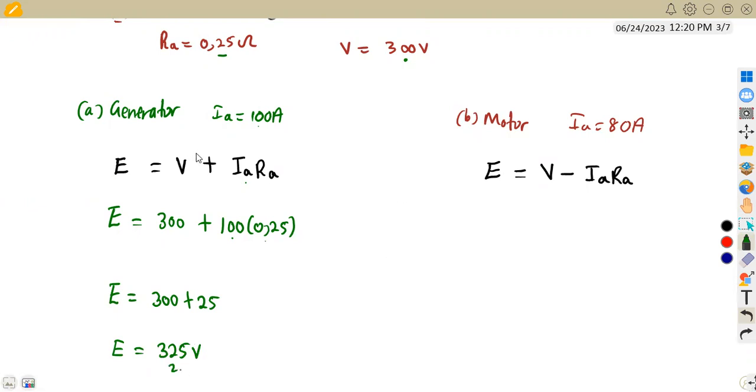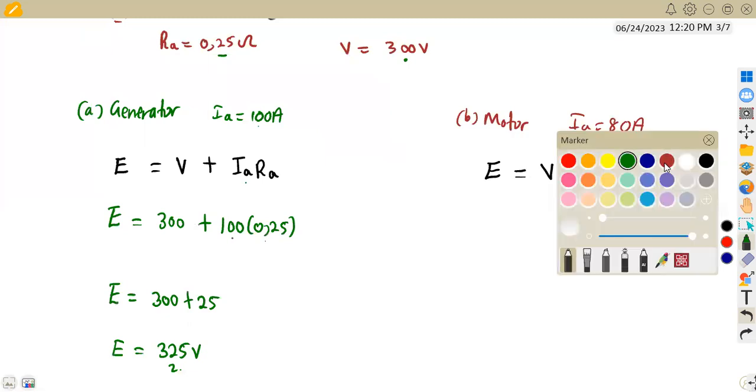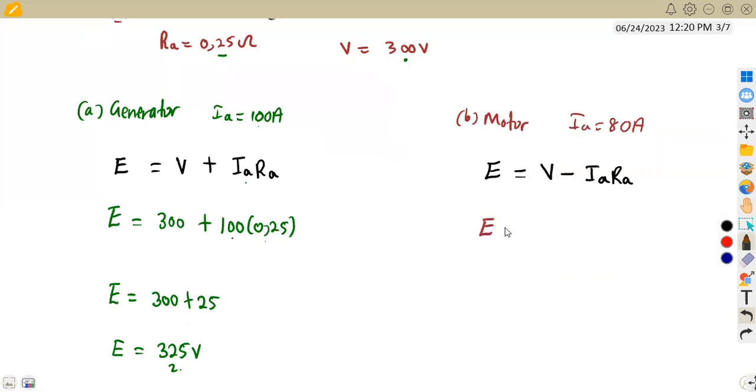So as a generator we are going to add, but when working as a motor, this time we are going to subtract. So our generated EMF is going to be V, our terminal voltage of 300 minus the armature current it is taking in, 80 amps. So that is 80 times the armature resistance of 0.25.